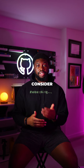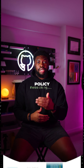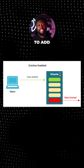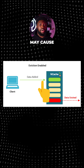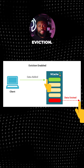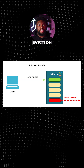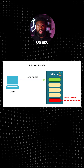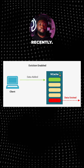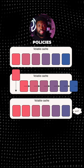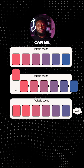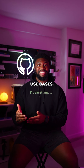Last but not least, consider creating an eviction policy. In situations where a cache is full, any request to add items to the cache may cause existing items to be removed — this is called cache eviction. The most popular eviction policy is least recently used, which removes items in the cache that have not been used recently. Other policies like least frequently used or first-in, first-out can be adopted to satisfy different use cases.